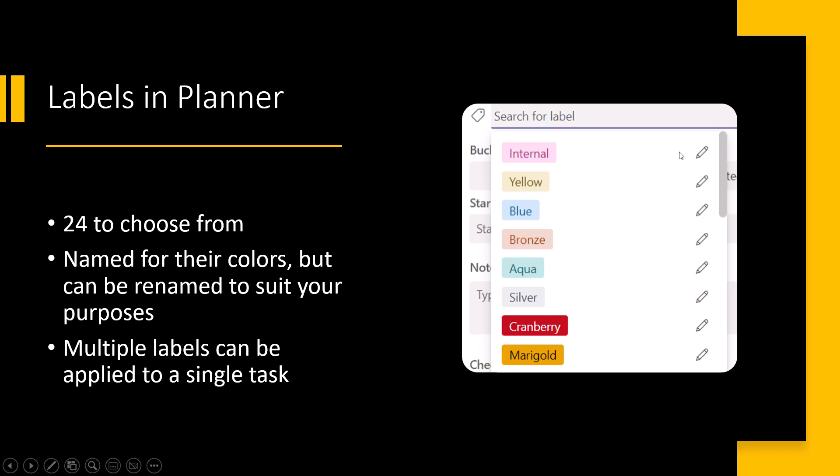Chances are you're going to choose which labels you want to use and then give them specific names. That's not going to break the form or the flow, but it's a good idea to have that naming convention established before you build your form. You'll want to make sure that in your form you're using the same language for the labels as you're using in the plan, since people are going to be interacting with both.